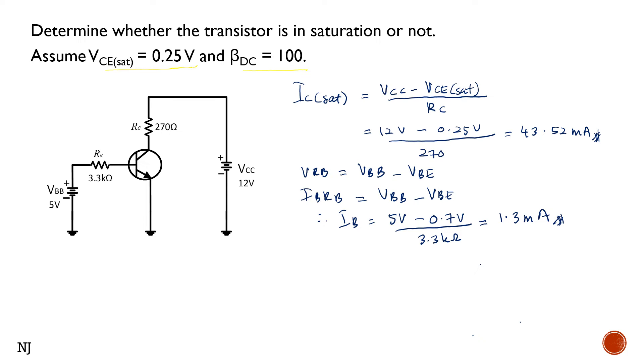Next we need to calculate the IC. The collector current IC is given by DC beta times IB. So DC beta of 100 times IB of 1.3 milliamps equals 130 milliamps.